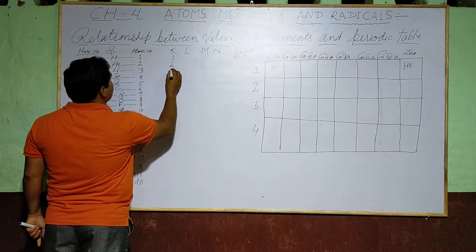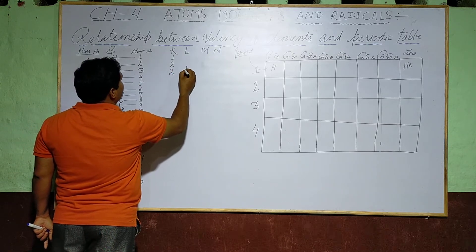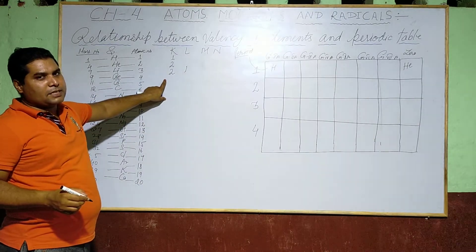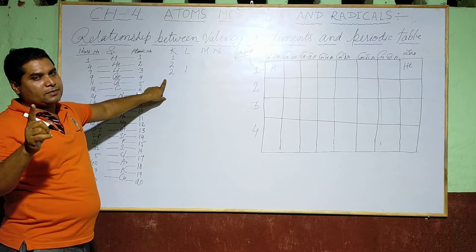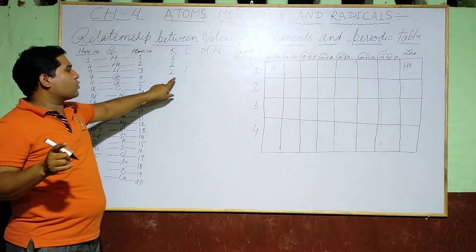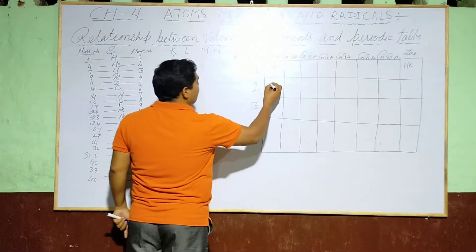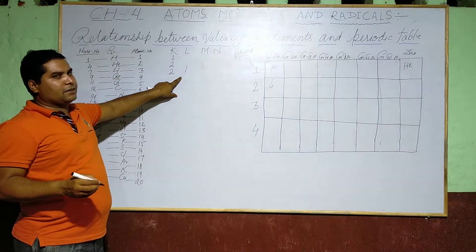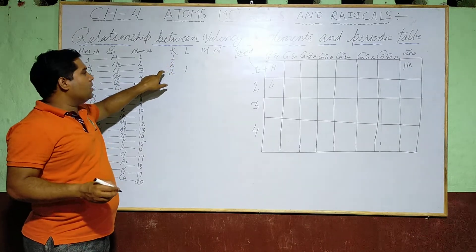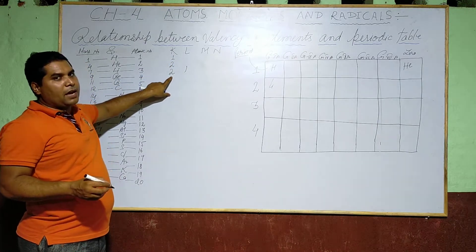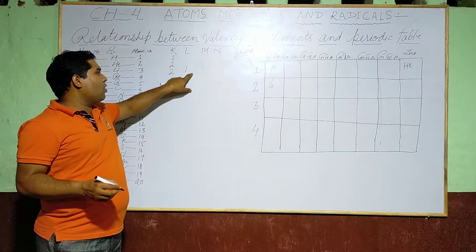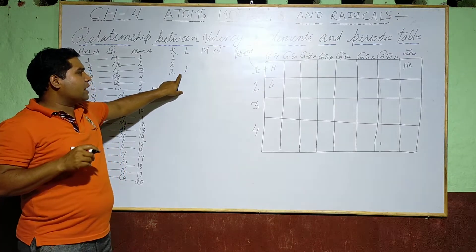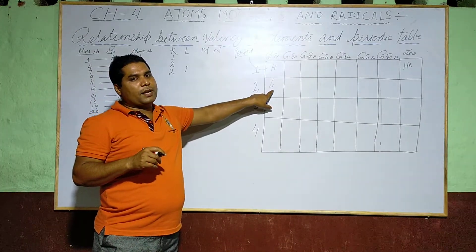Lithium has atomic number 3, with configuration 2 and 1. For the electronic configuration, two shells are required. Due to that, Lithium will be placed in the second period. The group will be 1A, because it has one valence electron.